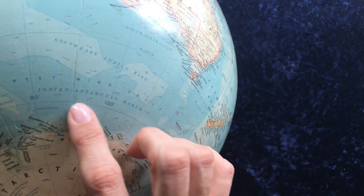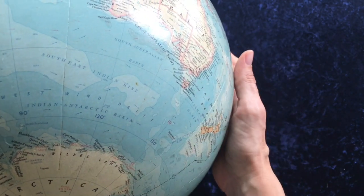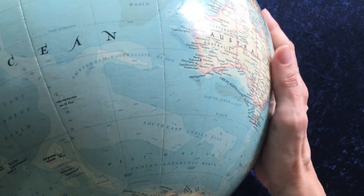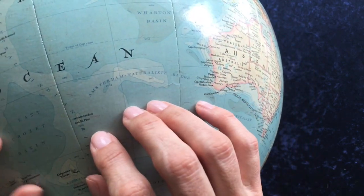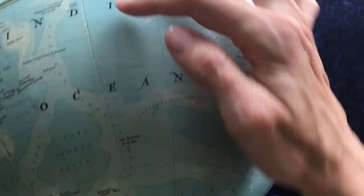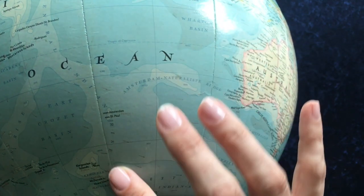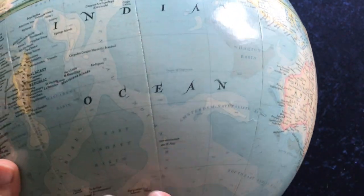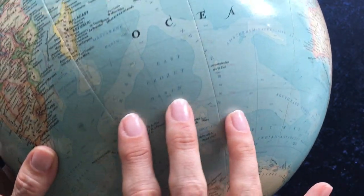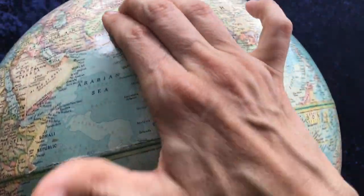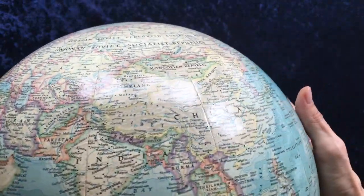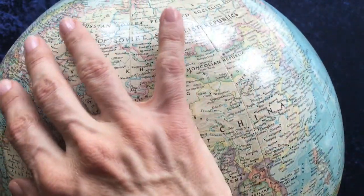The Indian Antarctic Basin. Central Indian Rise. So it's almost the path of the subcontinent as it collided into the continent of Asia.